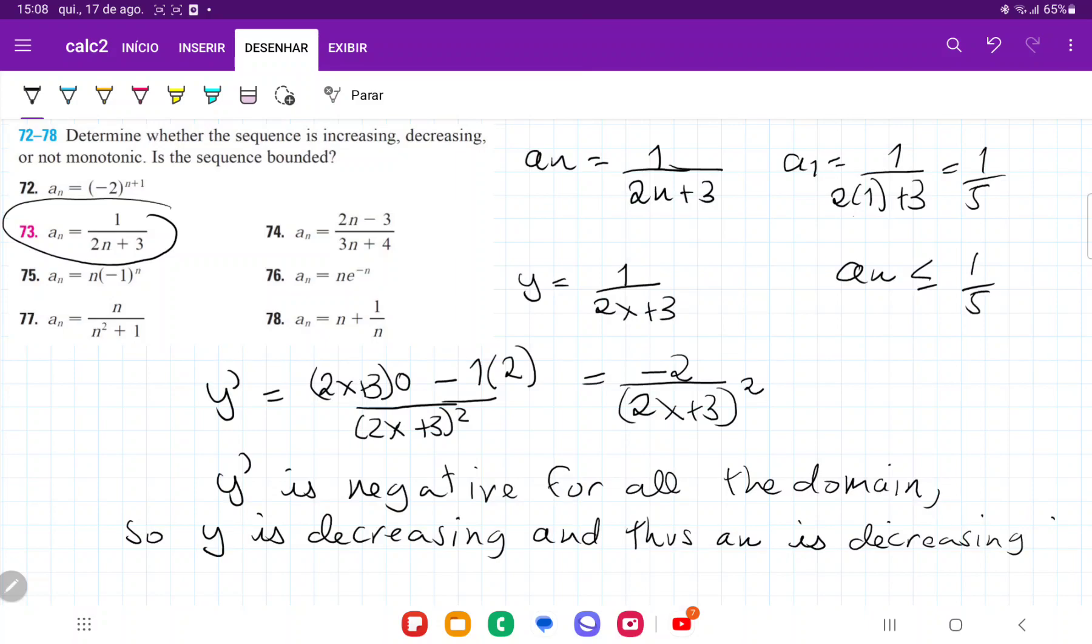And let's see what happens when we take the limit as n goes to infinity. So what happens at the very end of the sequence, if you will, even though it doesn't end? How does it behave? Well, we're going to have 1 divided by 2 times infinity plus 3, so that's 1 divided by infinity, which is equal to 0. So we can see that a n tends to 0 as n gets very large, so a n is greater than or equal to 0.